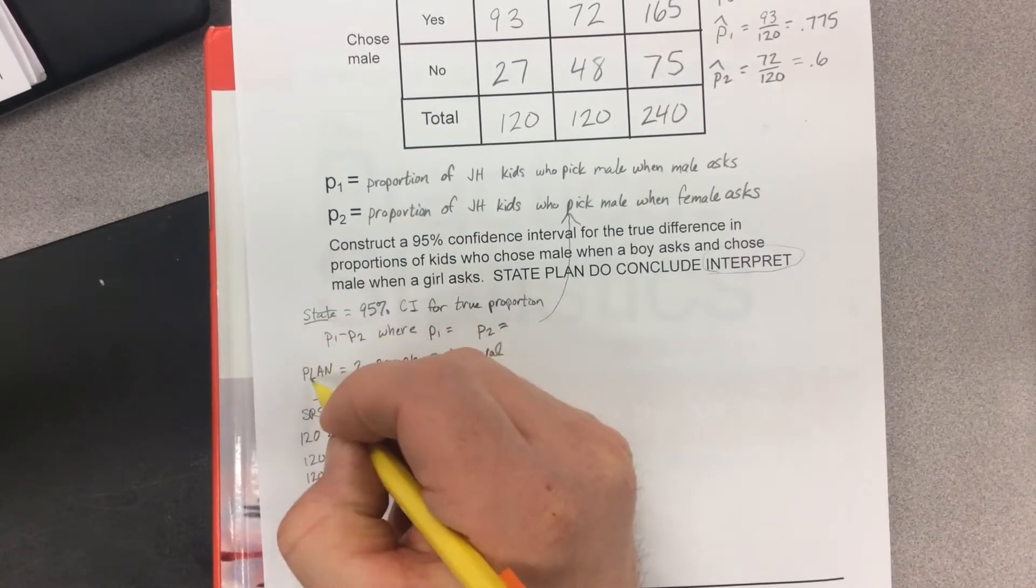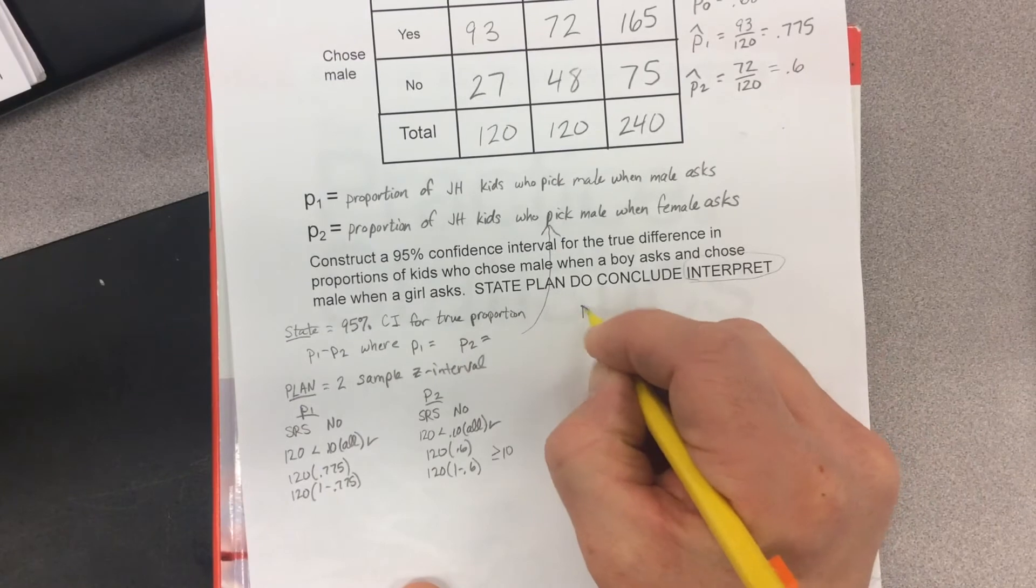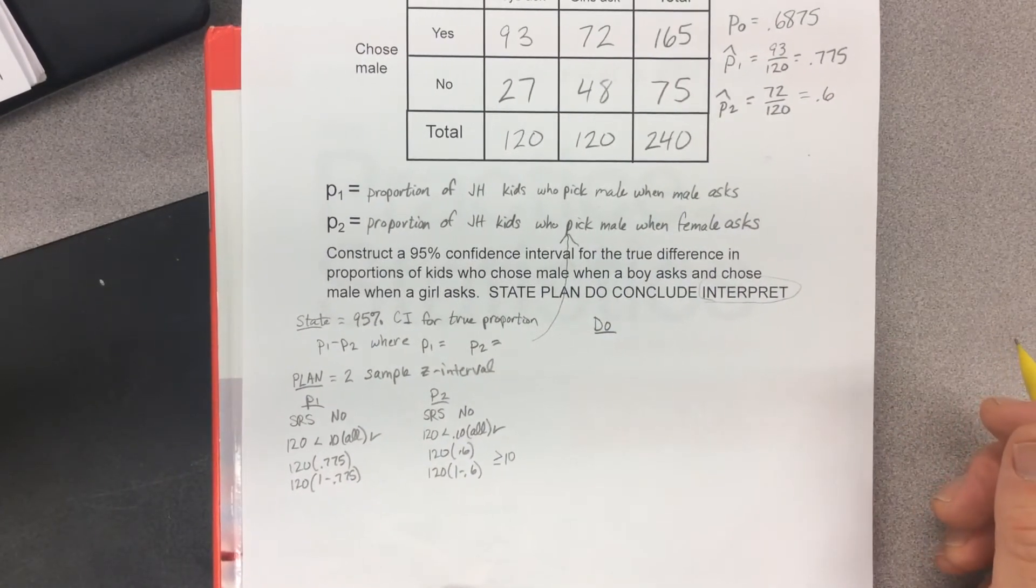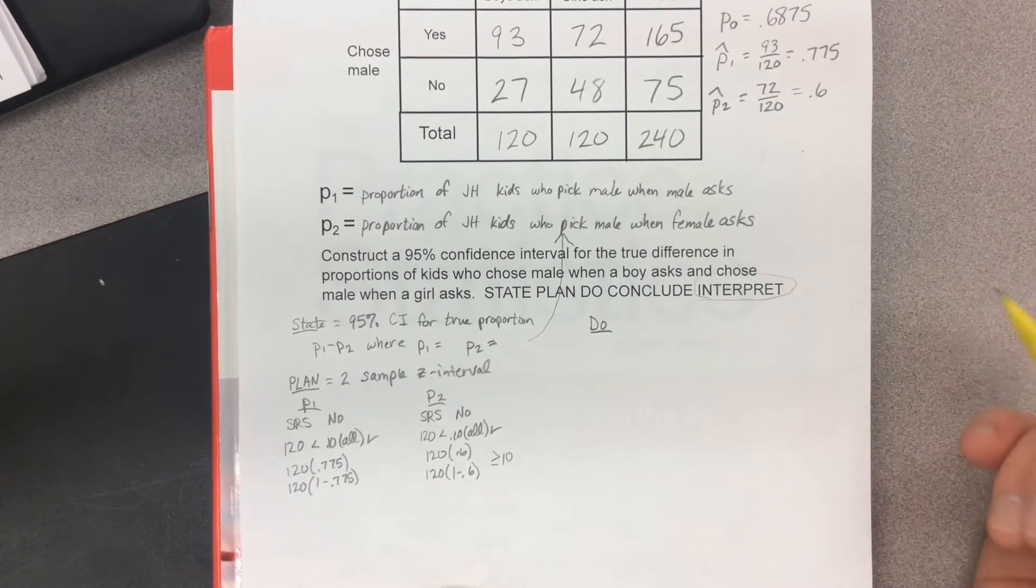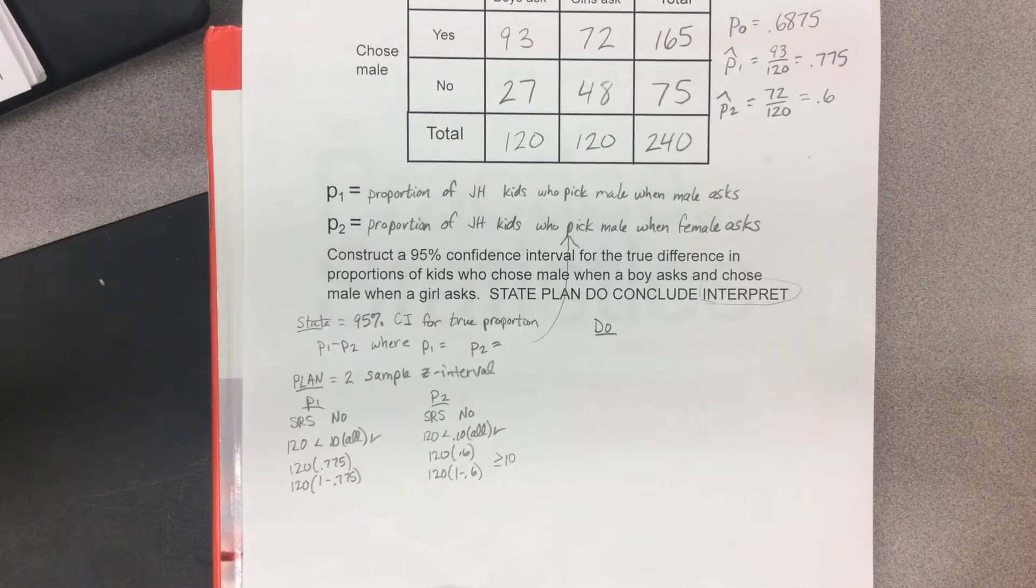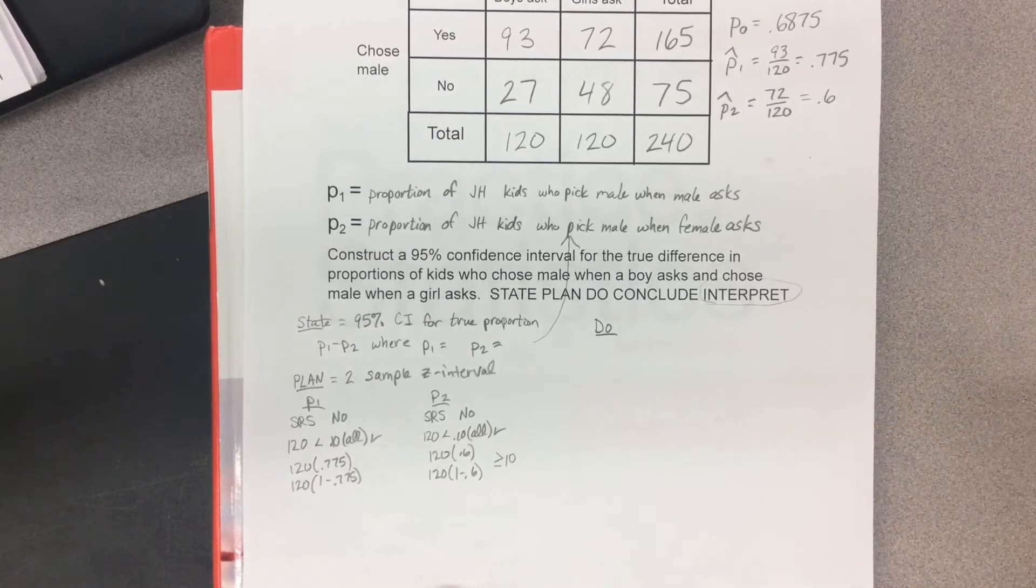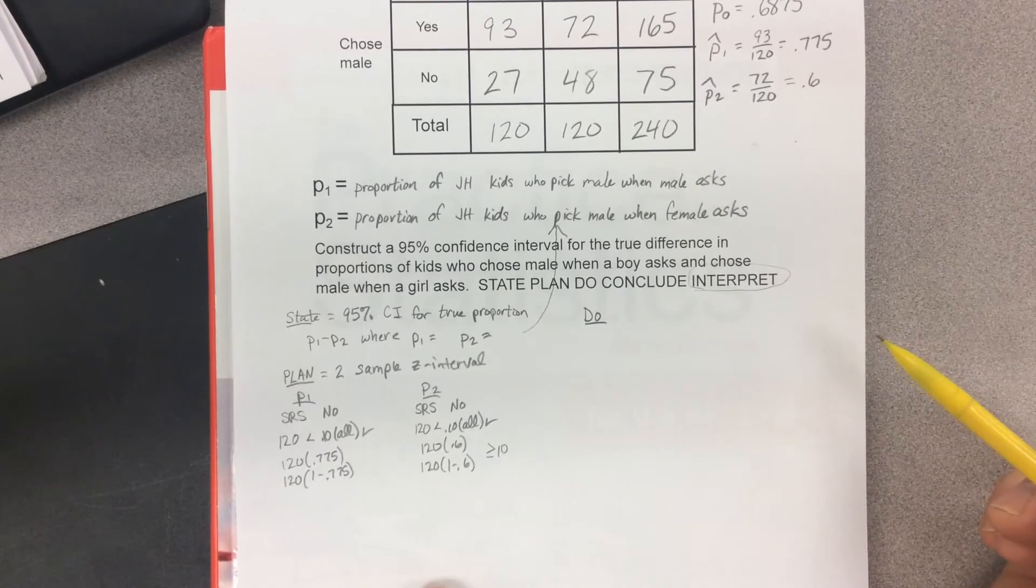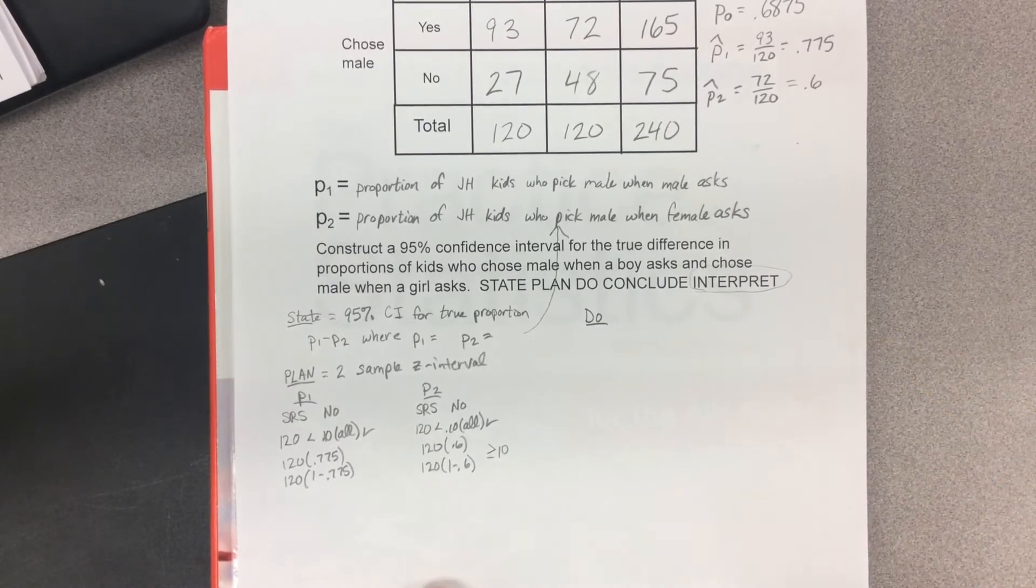Now here's where you take over. We've stated, we've planned. Now you're going to do a confidence interval. The confidence interval is P1 minus P2 plus or minus Z star times that big square root standard deviation. You need to go find that. We've been doing this for a couple videos.